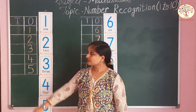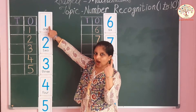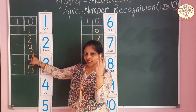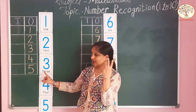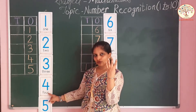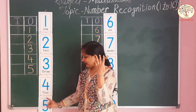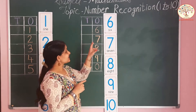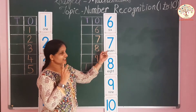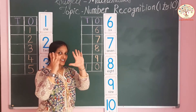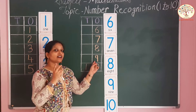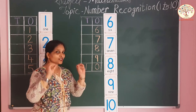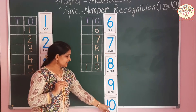Let's repeat it once. One, two, three, four, five, six, seven, eight, nine, and one zero — ten. One zero — ten.